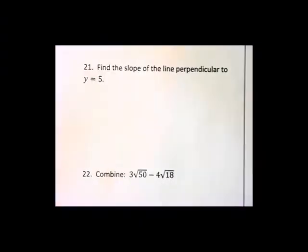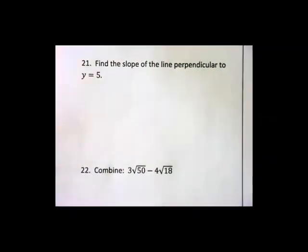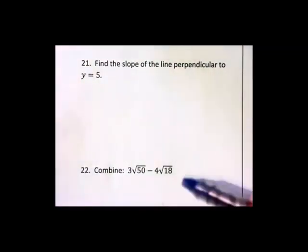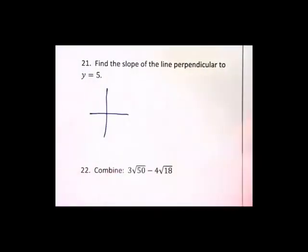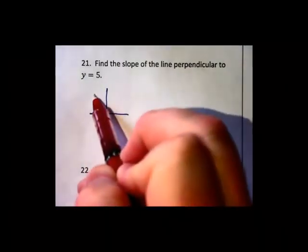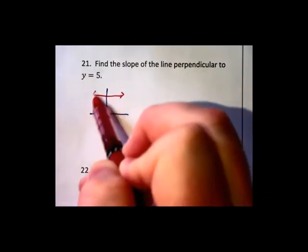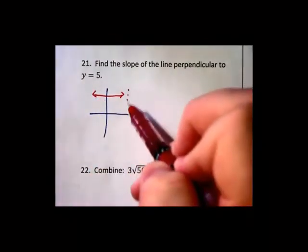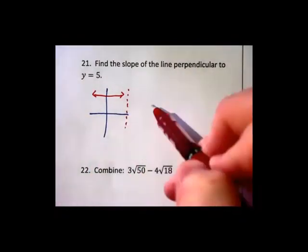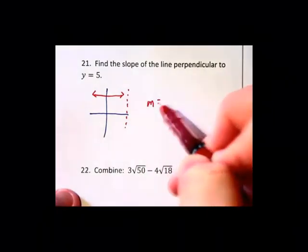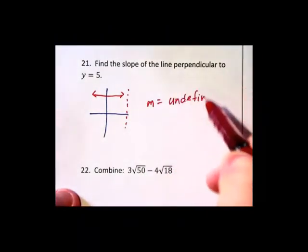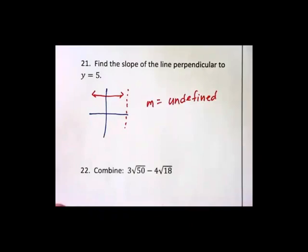Find the slope of the line perpendicular to this one. This is kind of a trick, you really don't have any math to do. Y equals 5 is a horizontal line, so any line perpendicular to it will be vertical, and the slope of any vertical line is undefined. So there's really no math to do, it's just a matter of understanding the principle.